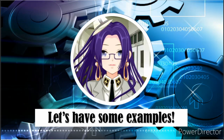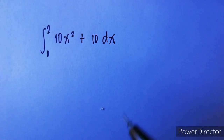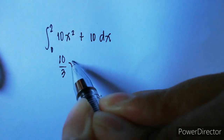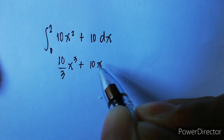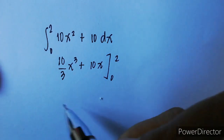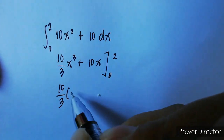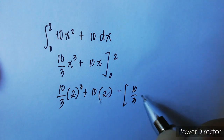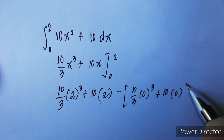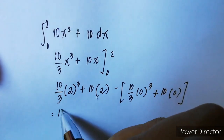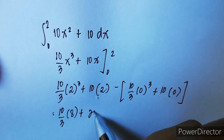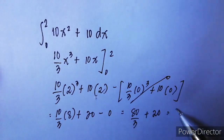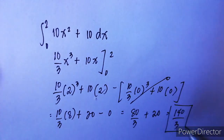Now let's have some examples. We have the integral of 10x squared plus 10 dx, with limits from 0 to 2. Applying the power rule, we get 10 over 3 times x cubed plus 10x, evaluated from 0 to 2. Substituting: 10/3 times 2 cubed plus 10 times 2, minus 10/3 times 0 cubed plus 10 times 0. Simplifying: 10/3 times 8 is 80/3, plus 20, minus 0. The final answer is 140 over 3.